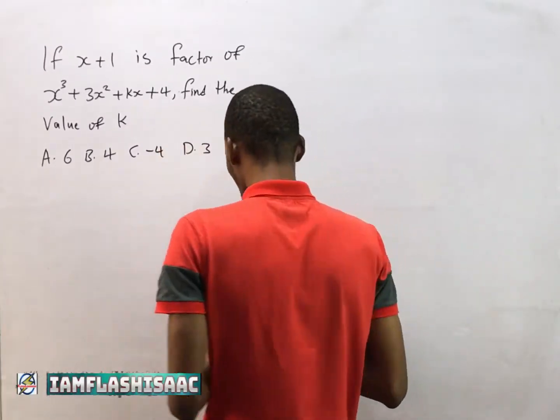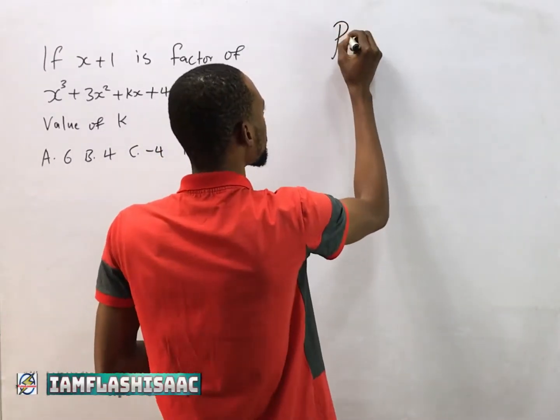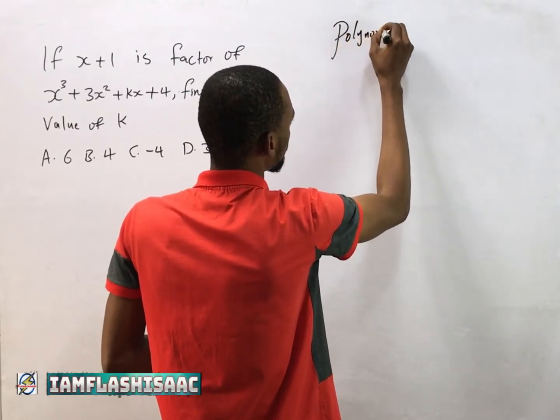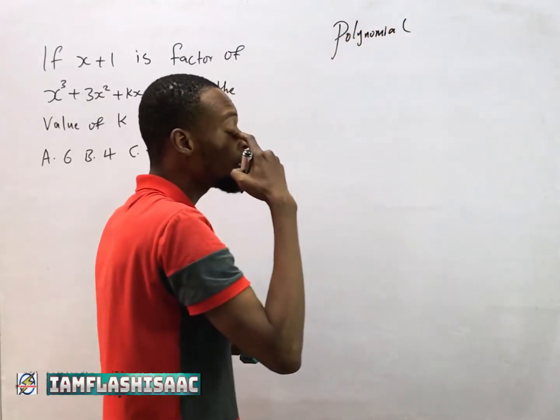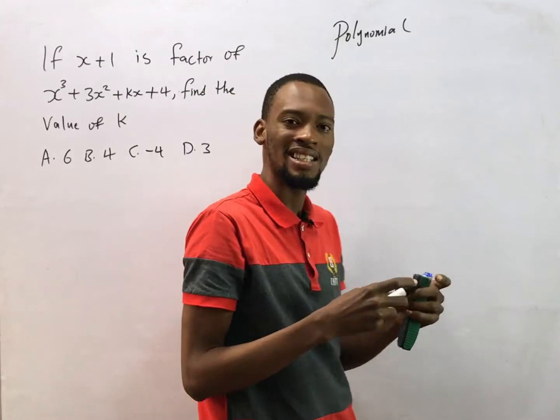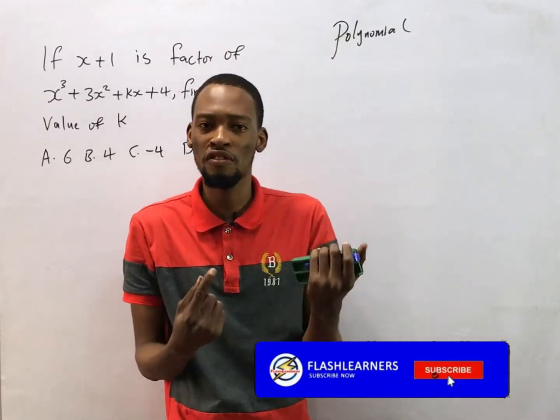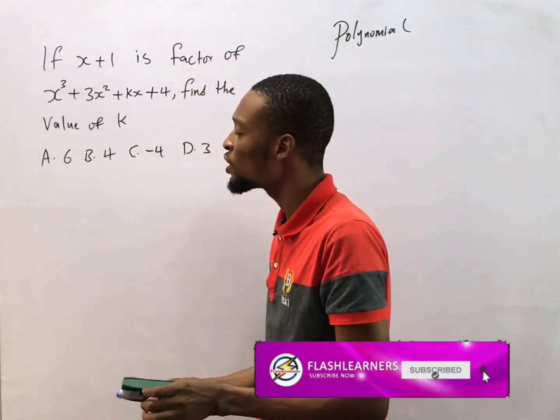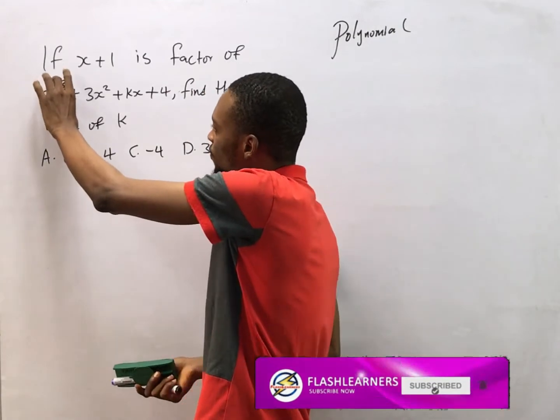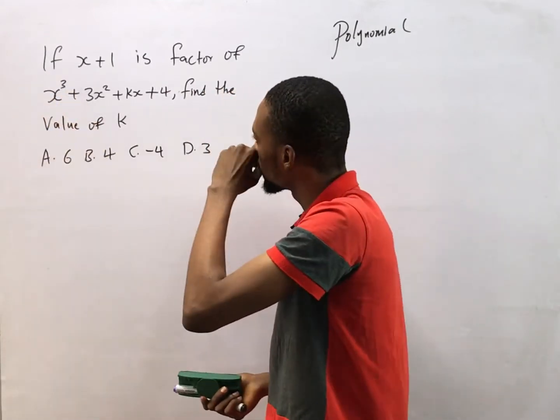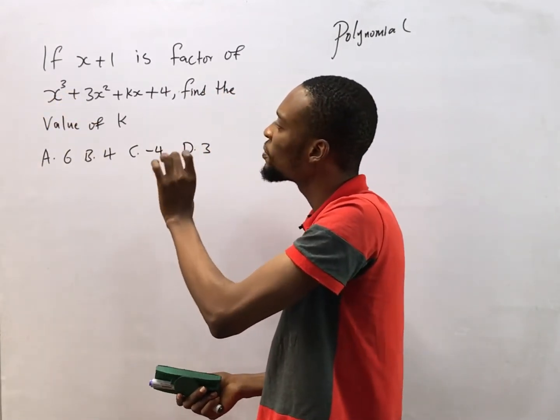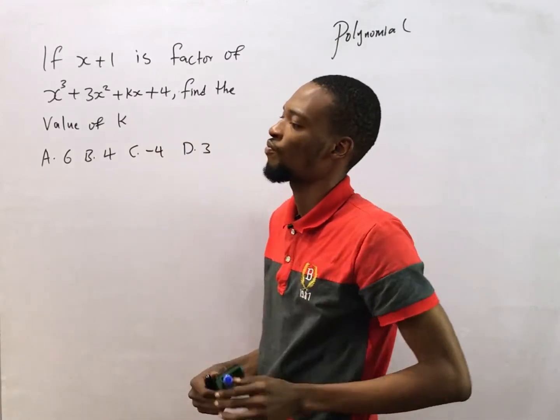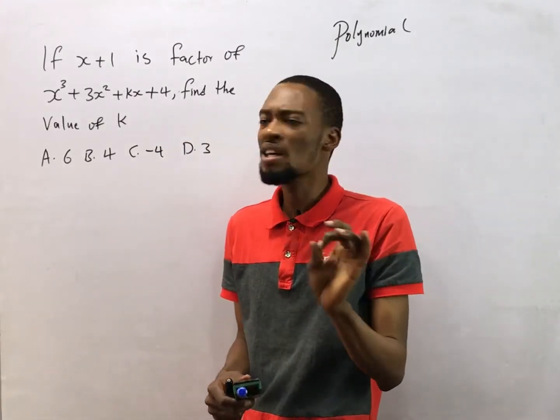Looking at this question, this is a polynomial question. Polynomials are expressions with ascending or descending orders of powers. This polynomial has a power of three as the highest power, so therefore we can say that the polynomial is of degree three.